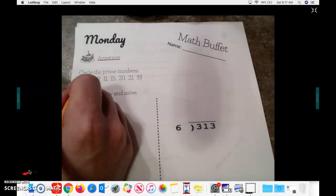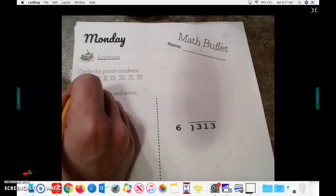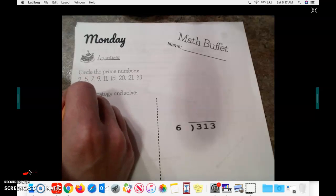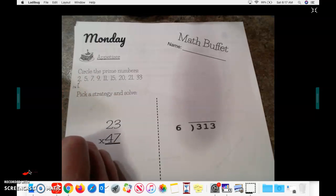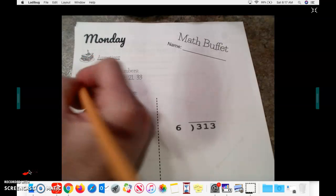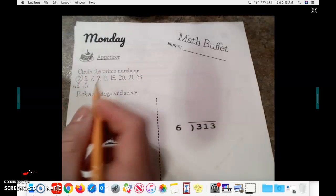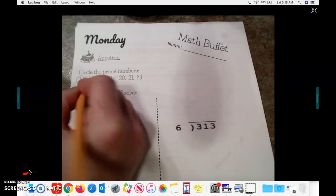So in this case, and I'll just do a couple of these for example, if I look at the number 2, I know I can only multiply 1 times 2 to get 2. So that is going to be a prime number, so I will circle it. When I look at 5, I know I can only do 1 times 5 to get 5. So I'm going to circle 5.